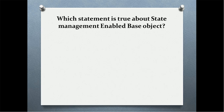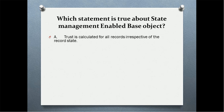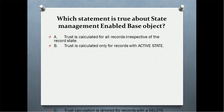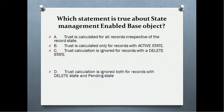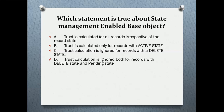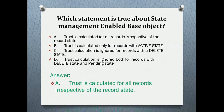Next question: which statement is true about a state management enabled base object? Trust is calculated for all records irrespective of the record state; trust is calculated only for records with active state; trust calculation is ignored both for records with active state and pending state. The answer is trust is calculated for all records irrespective of the record state.